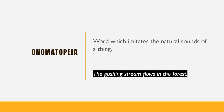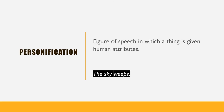Onomatopoeia is defined as a word which imitates the natural sounds of things. It creates a sound effect that mimics the thing described, making the description more expressive and interesting. For instance, saying 'the gushing stream flows in the forest' is a more meaningful description than just saying 'the stream flows in the forest.' The reader is drawn to hear the sound of a gushing stream, which makes the expression more effective. Also think of sounds animals make, like 'meow' or 'moo,' or words like 'ding dong' when the bell chimes. Personification is a figure of speech in which a thing, an idea, or an animal is given human attributes. The non-human objects are portrayed in such a way that we feel they have the ability to act like human beings. For example, when we say 'the sky weeps,' we are giving the sky the ability to cry, which is normally a human quality — so we can say the sky has been personified.